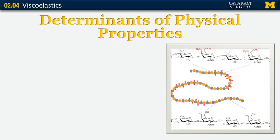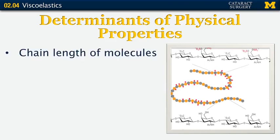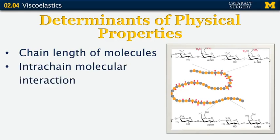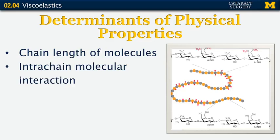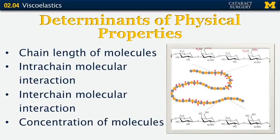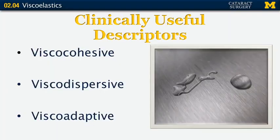Now that we understand some of these fancy rheologic terms, let's talk about the physical characteristics of some of the compounds which determine their properties. One characteristic is chain length — these are polymers with pretty long chain lengths. Increasing chain length increases interchain reactions, which increases viscosity and elasticity. And if you increase the substance's concentration, you'll also increase interchain molecular interactions, increasing viscosity and elasticity while decreasing pseudoplasticity.